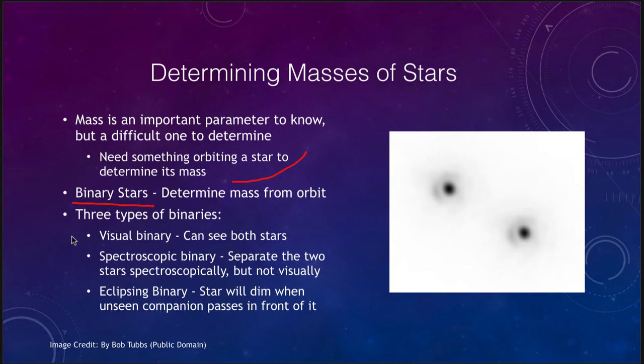There are three specific types of binaries. First is the visual binary which we see here where you can see two very distinct stars. When we take an image of this part of the sky we could see two stars and we could note that over time they may be revolving around each other. We could track out that orbit and determine the orbital properties so that we could figure out the masses.